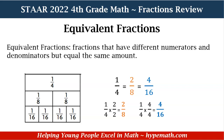In order to find an equivalent fraction, what we need to do is multiply the numerator and denominator by the same amount, or we can divide the numerator and denominator by the same number. We have one-fourth, and we are multiplying the numerator and denominator by two. When we multiply our numerators going across, one times two is equal to two, and four times two is equal to eight. And that is how we have two-eighths, which we see with our picture that it does equal the same amount as one-fourth.